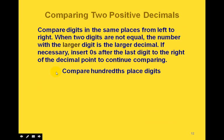It can be hard to always graph values, so we have other methods. When comparing two positive decimal values, start by comparing digits in the same place values from left to right. If the digits in corresponding place values are equal, keep going to the right until they're not equal. Once you find a differing place, the number with the larger digit in that place is the larger decimal.